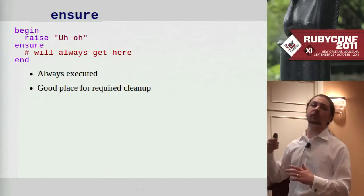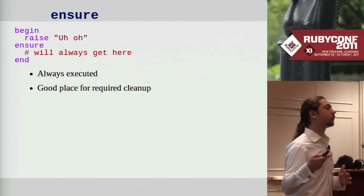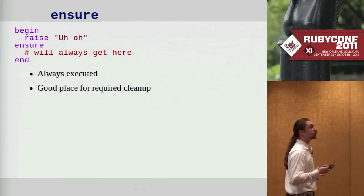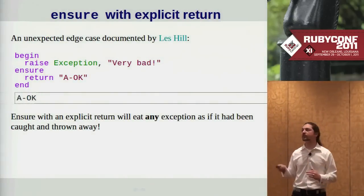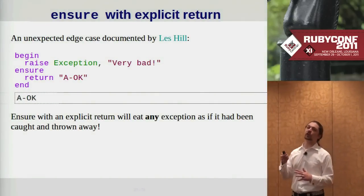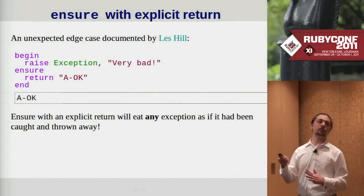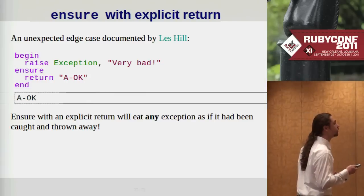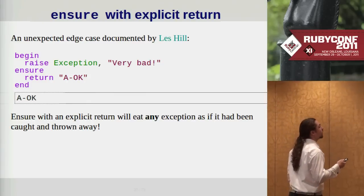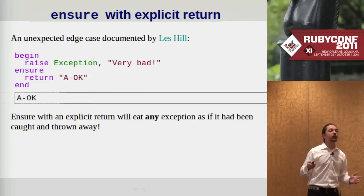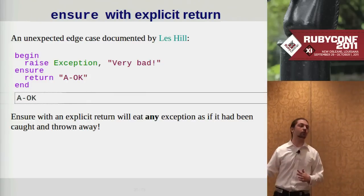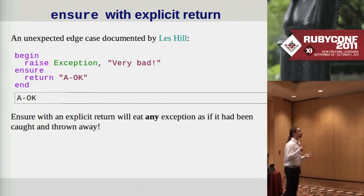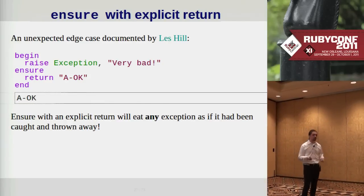We also have an ensure clause, where we put code that will always be executed whether an exception is raised or not. This is a good place to put cleanup code. Les Hill has documented an interesting corner case with ensure: if you have an explicit return inside your ensure clause and an exception is raised, that exception can be thrown away without a trace — it'll just return normally. So it's probably a good idea to avoid explicit returns inside your ensure clauses.